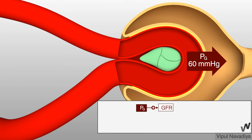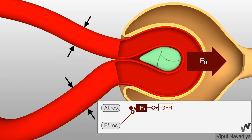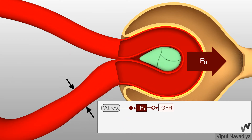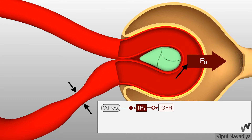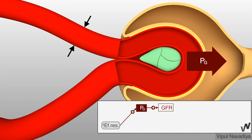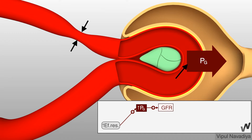This high pressure is due to the difference in diameters of afferent and efferent arterioles, which is smaller in efferent arterioles. As we saw in the video on renal blood flow, this pressure changes with changing resistance of afferent and efferent arterioles. Increase in afferent arteriolar resistance causes a fall in this pressure, whereas increase in efferent arteriolar resistance causes a rise in this pressure.